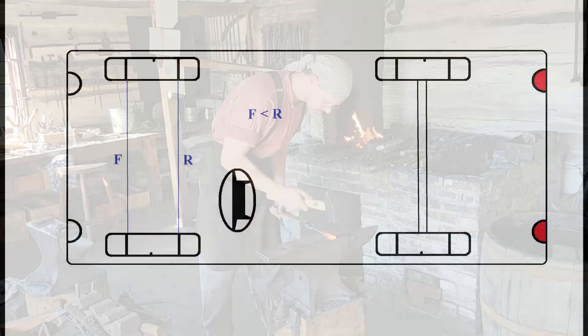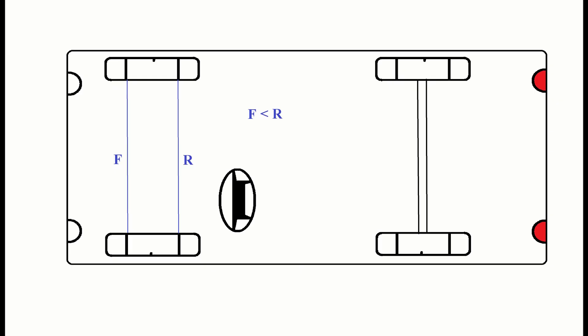Ok, so what is this toe alignment? The toe in is the difference between distance R measured at the rim rear end on the level of center of the wheel and the distance F measured at the rim front end on the same level. To have toe in, the front distance must be smaller than the rear distance. The value of it depends on the make and model of a car. Toe out is the opposite.